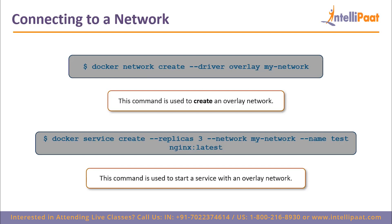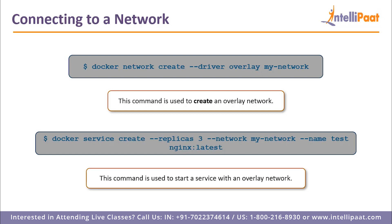Now we will see how to connect a service to a network. The command `docker network create --driver overlay my_network` will create an overlay network. If you want to start a service with an overlay network, you use the command `docker service create --replicas 3 --network my_network --name test nginx`. This will create a service on our Docker Swarm connected to the overlay network called 'my_network', with the service name 'test', running nginx with three replicas.